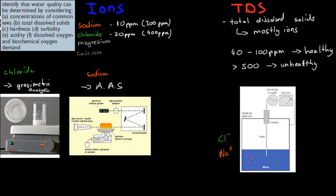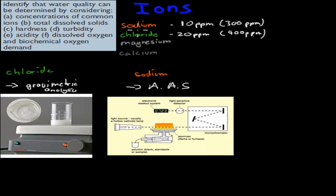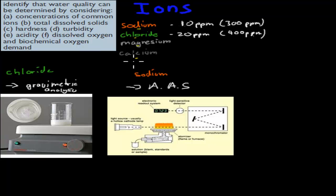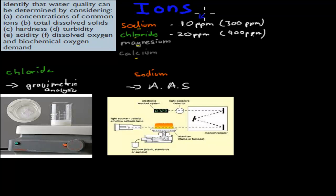First, common ions. These would be things like sodium and chloride, which are quite common in the ocean, and also magnesium, calcium, aluminum, and phosphate — though ideally in many cases they shouldn't be as common as they are. The most common ones are sodium and chloride. An example of levels in drinking water would be about 10 parts per million for sodium and 20 parts per million for chloride.